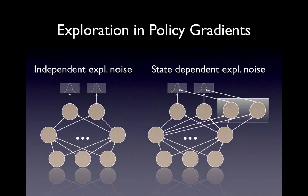Usually in policy gradients, exploration is done by adding Gaussian noise to the output of the agent. There exist two variants for doing this. Firstly, the mean of the final output is the output of the agent, and the standard deviation is an additional free parameter that has to be adjusted by the learning algorithm. Secondly, the mean is again the output of the agent, but the standard deviation is now defined by an additional output of the agent.